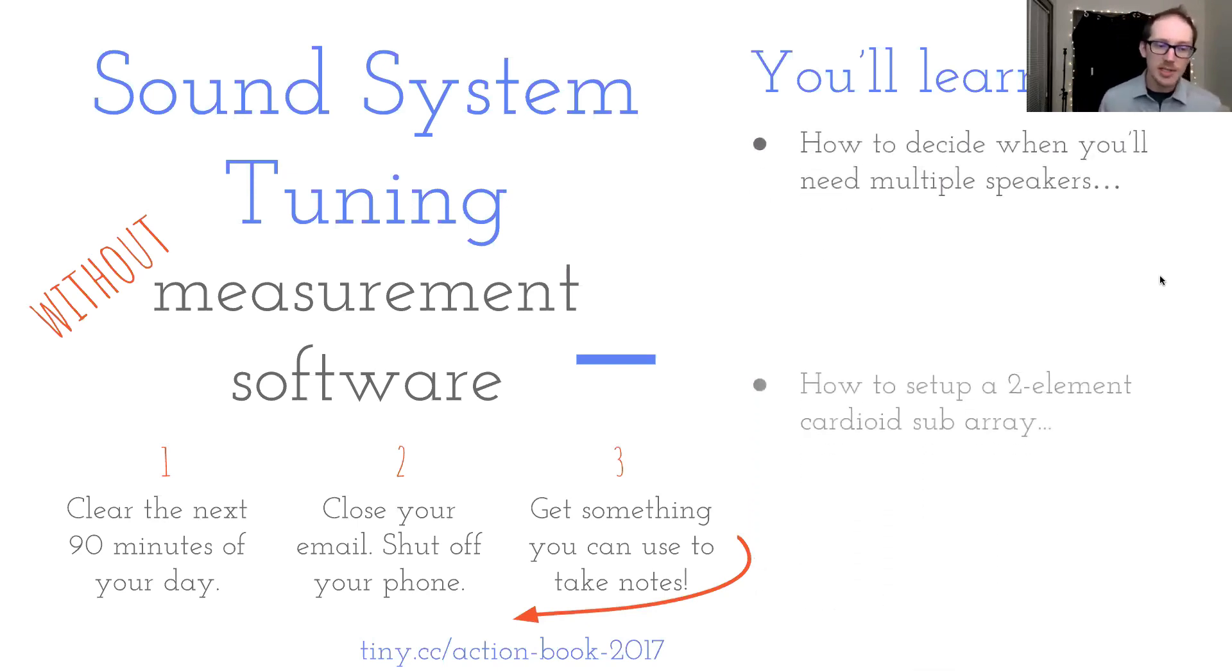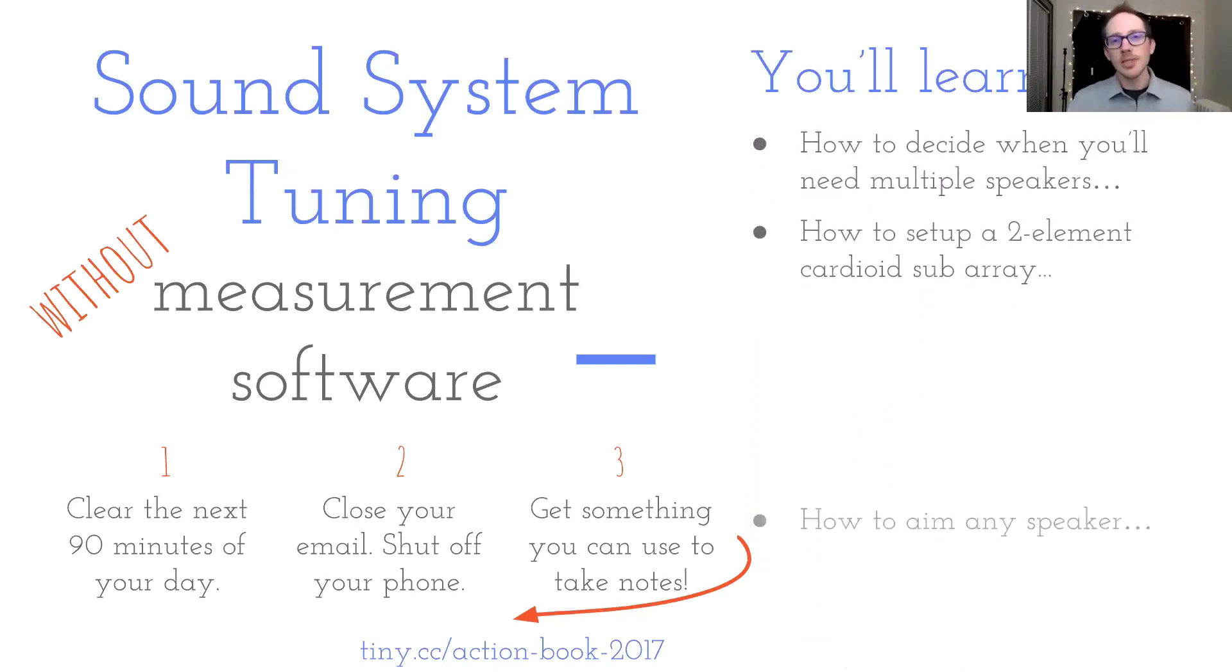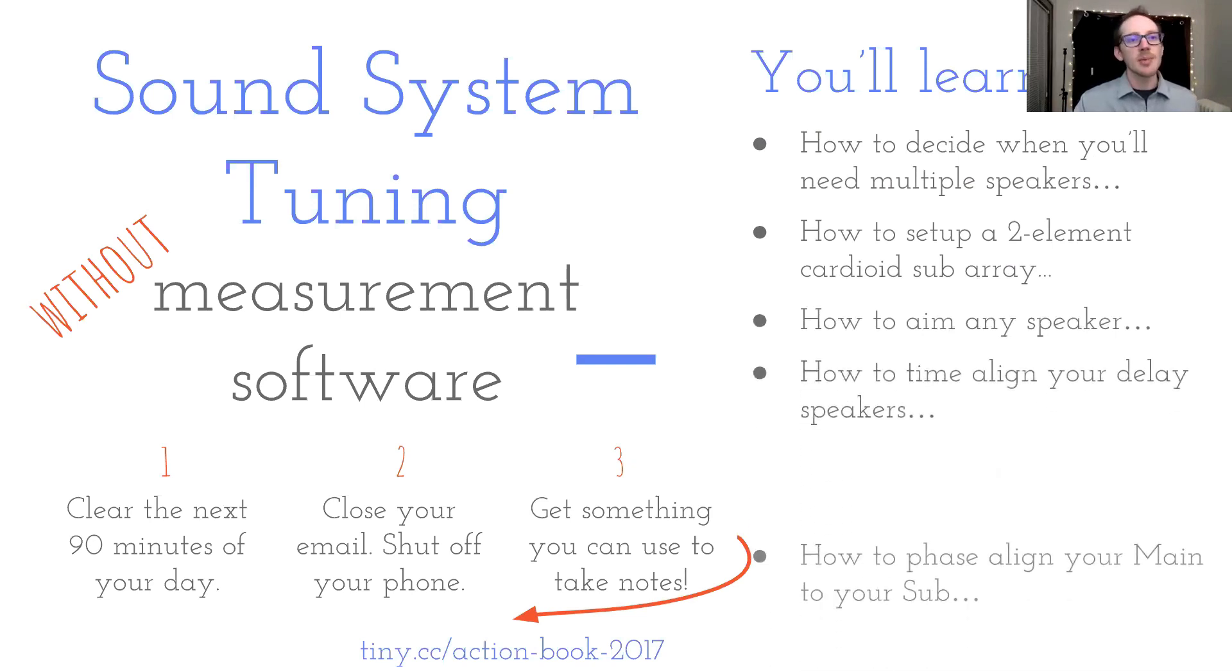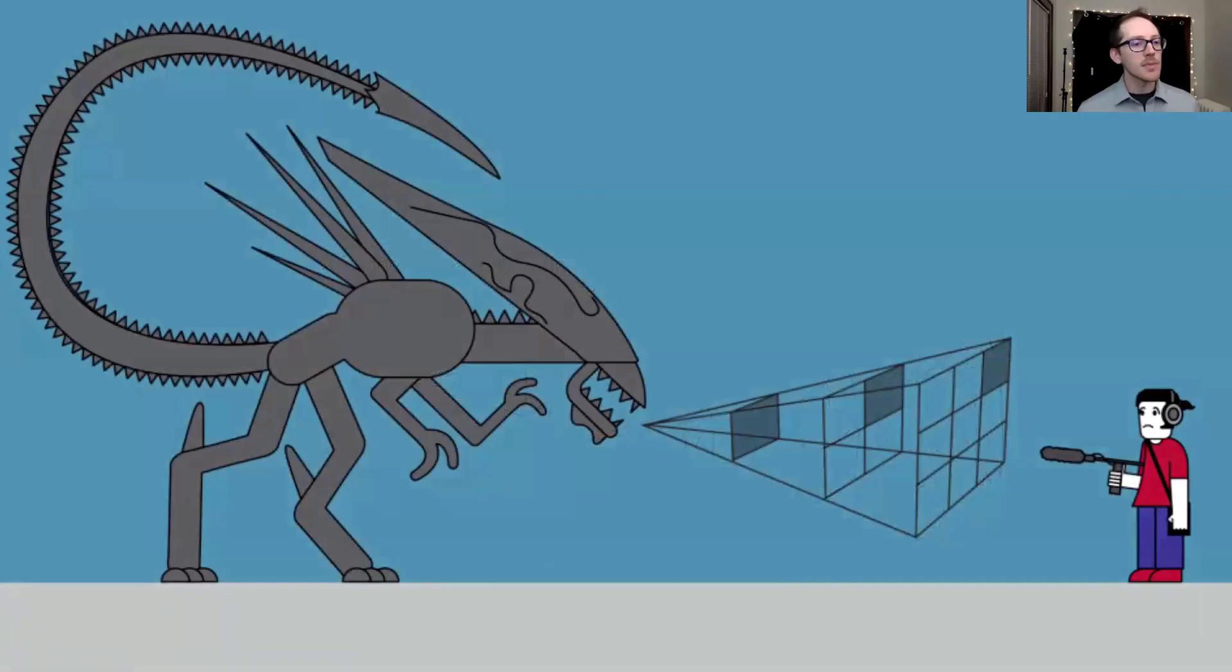How to decide when you'll need multiple speakers, how to set up a two element cardioid subwoofer array, how to aim any speaker, how to time align your delay speakers, phase align your main to your sub, and sound level loss due to air absorption is frequency dependent.